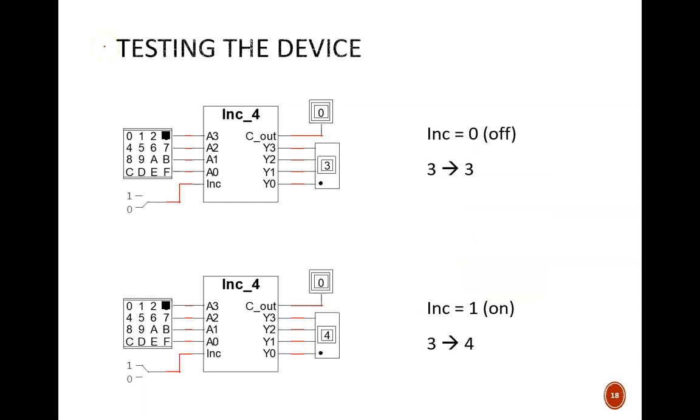On this final slide are examples of a 4-bit incrementer device. In the top schematic, the input of 3 is not being incremented because of the 0 on this switch. Therefore, the output is 3.